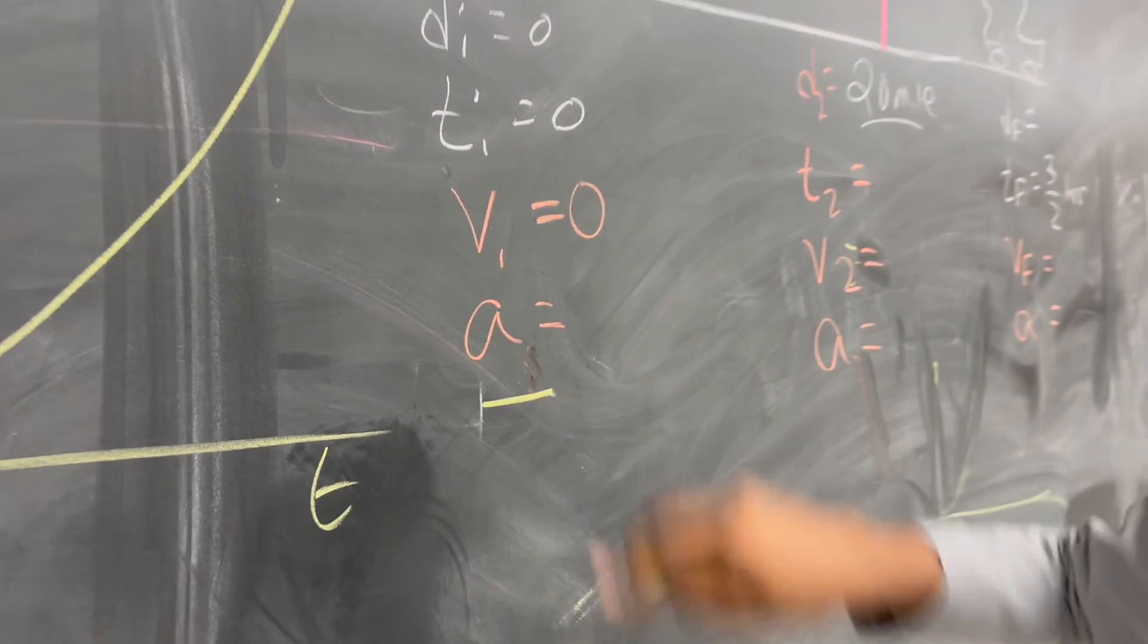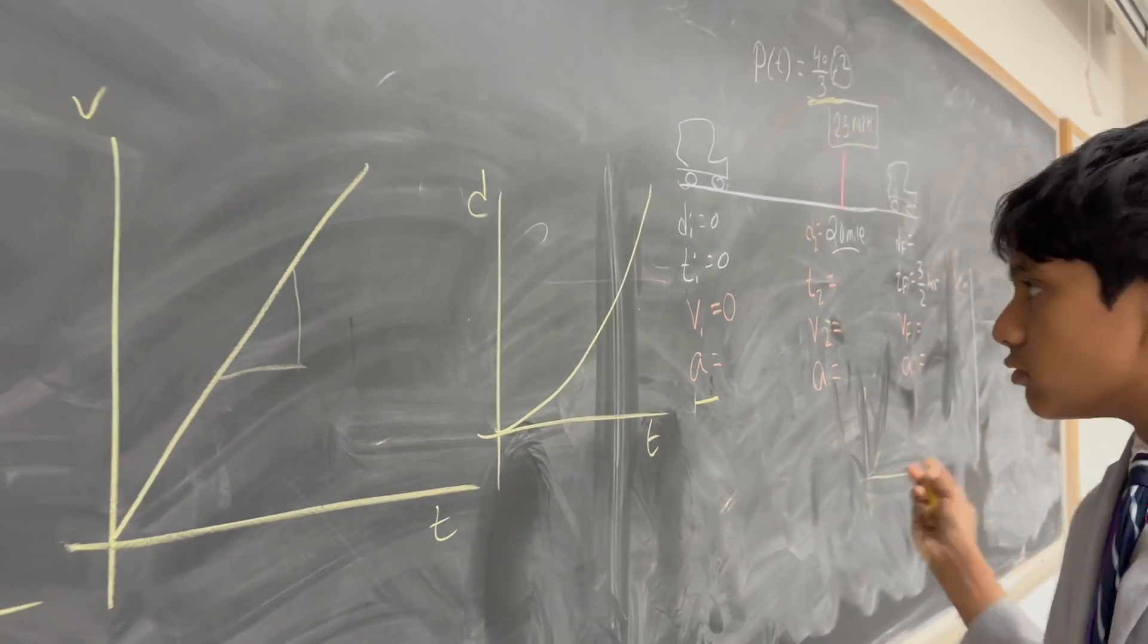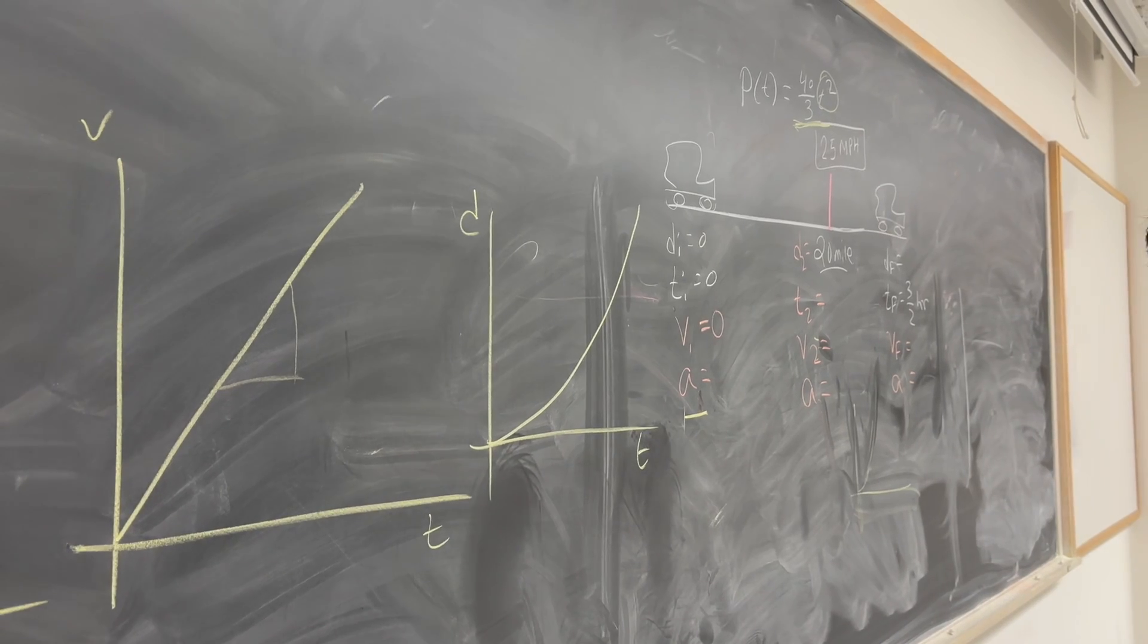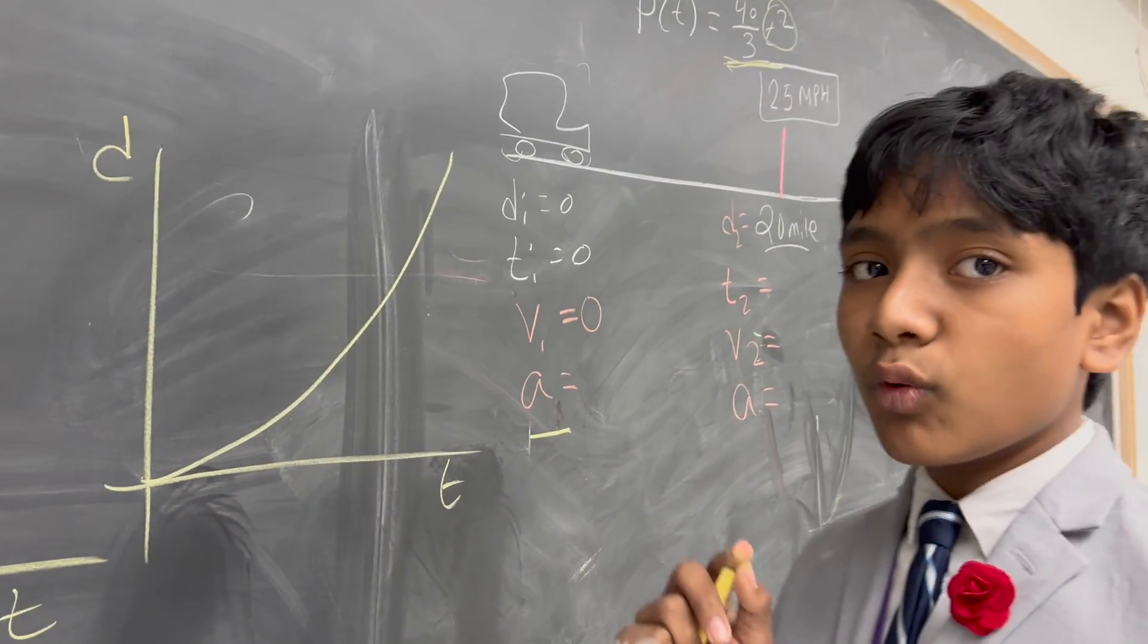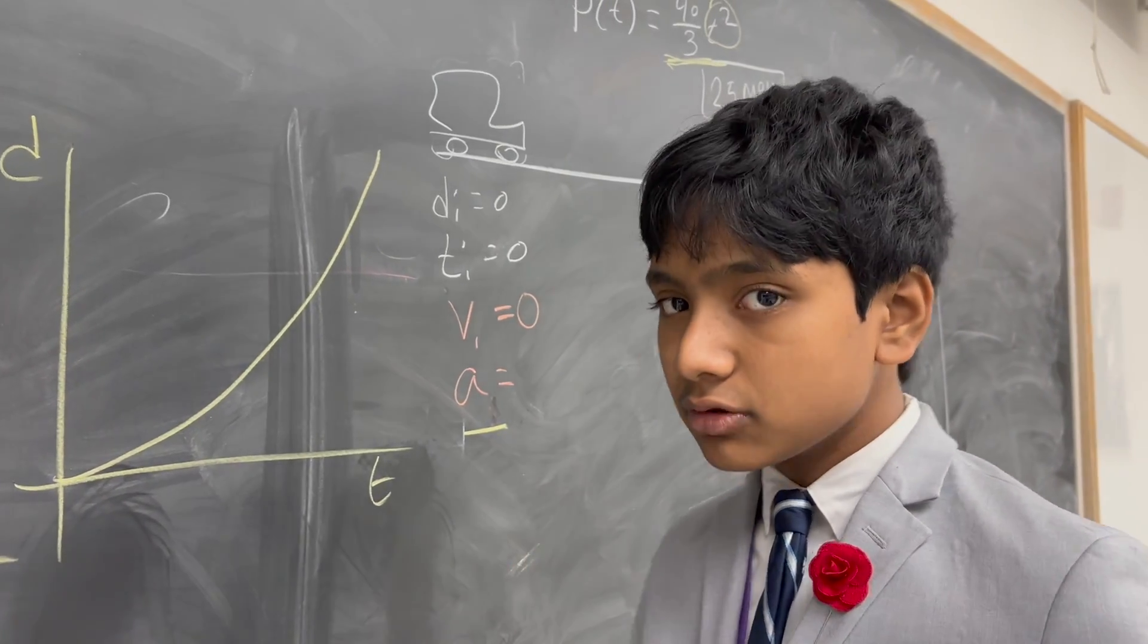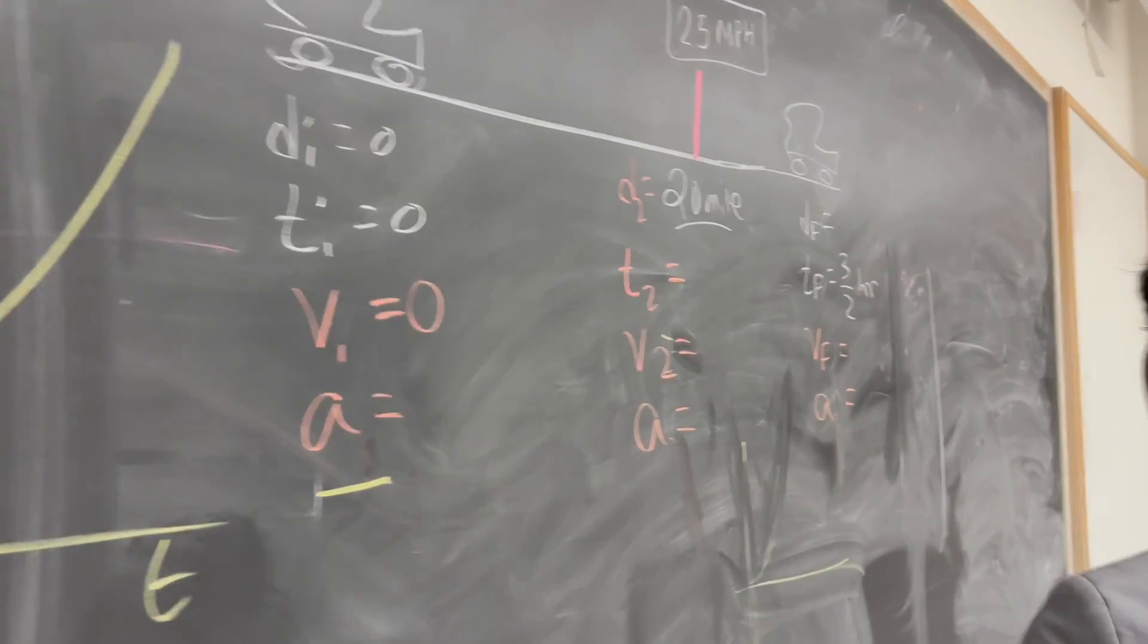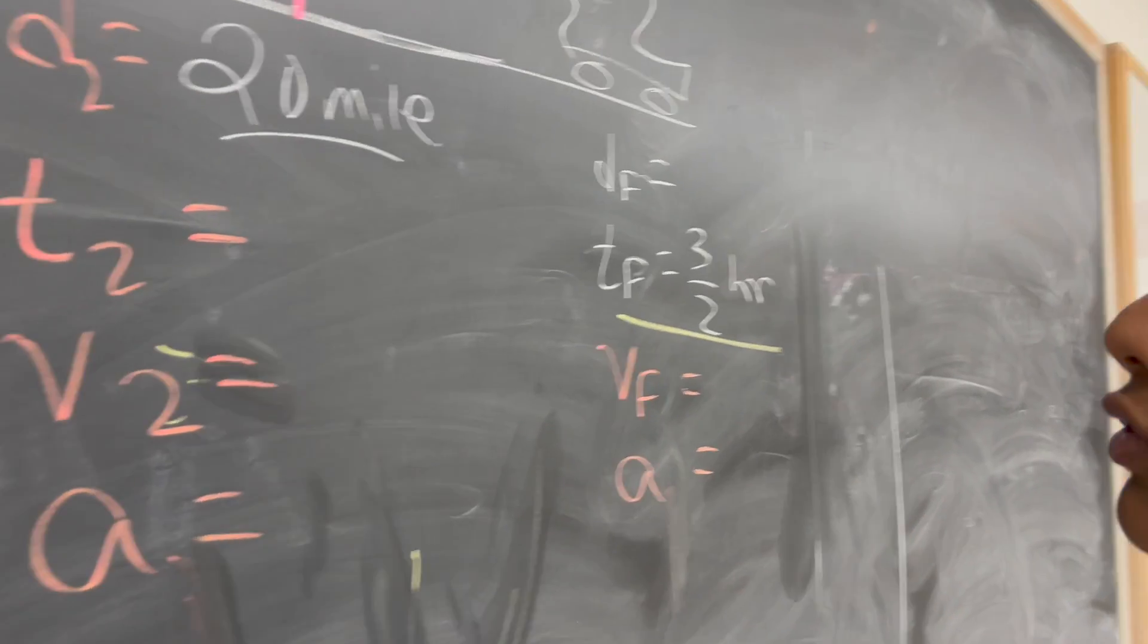All right. So now, what are the actual quantities of them? Well, that's very important for us to find out. And that's what we're about to find out right now. So, first of all, we know T final is 3 over 2 hours.